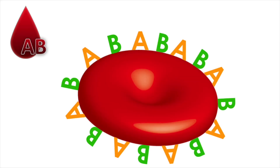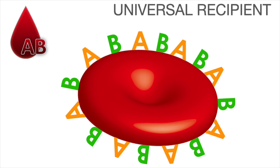As you just saw, AB blood never produced an immune response — not when exposed to A, B, or O blood. This is because AB blood has both the A and B antigens, and therefore neither A nor B antigens are considered foreign to AB blood. So AB blood individuals cannot produce anti-A or anti-B antibodies, making AB blood the universal recipient, meaning it can receive blood from A, B, or O blood donations.